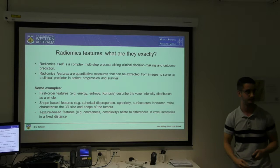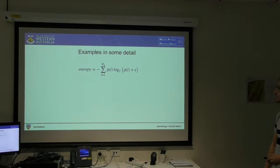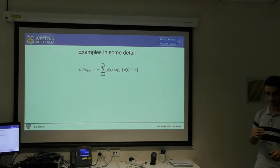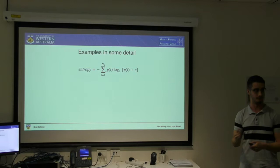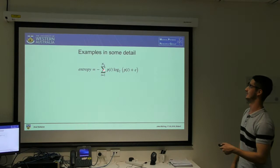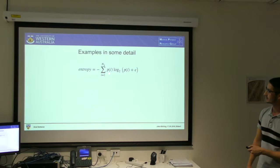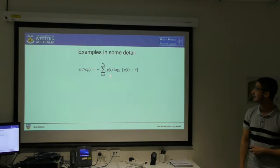Looking at some examples in detail — entropy is related to the randomness of the region of interest in voxel values. It's been shown that the more heterogeneous a tumour is, the higher the level of malignancy — the more heterogeneous, the more aggressive. The formula: N_G is the number of intensity values, P_I is the probability that a voxel will have intensity I, and epsilon is an arbitrarily small number set to approximately 10 to the negative 6.